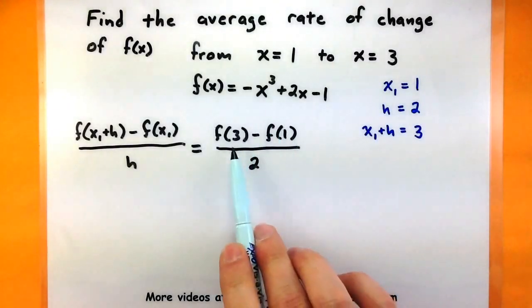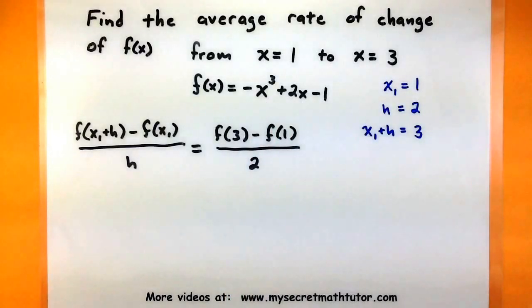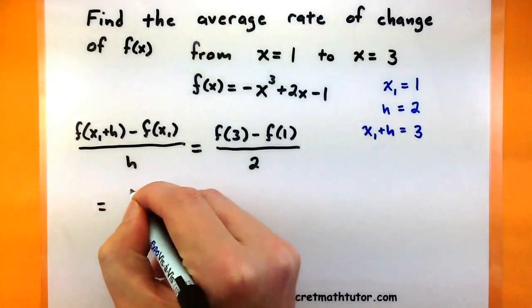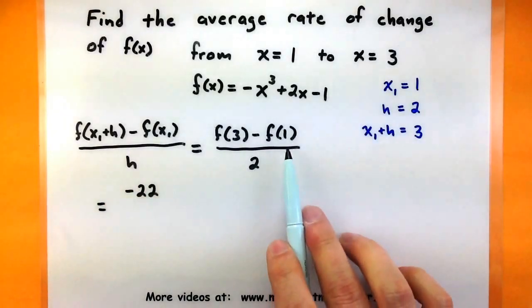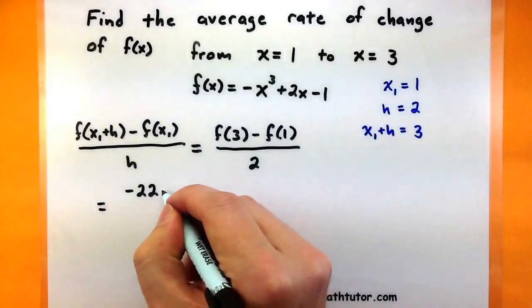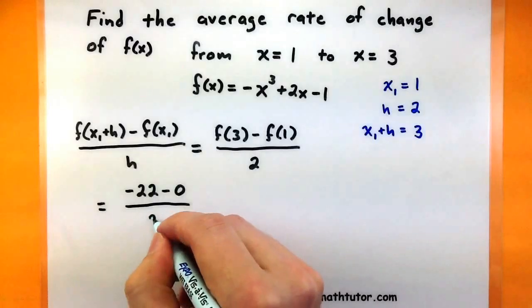After doing some quick calculations, 3³ and 3 multiplied by 2, subtracting those things because of the negative sign, I get -22. When you plug 1 into all of this, you get 0. We'll evaluate this all over 2.